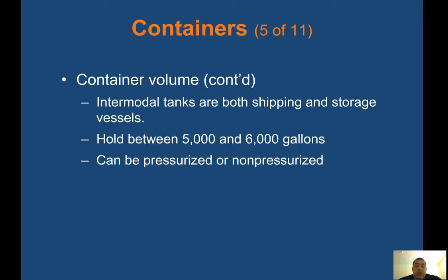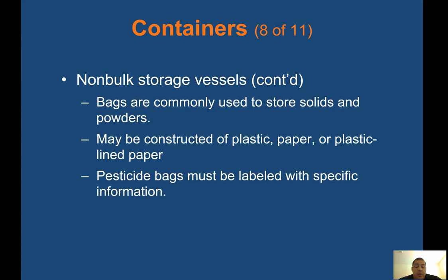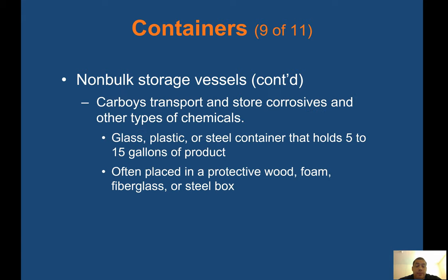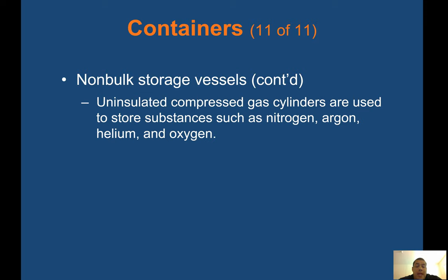Intermodal tanks are both shipping and storage vessels, holding between 5,000 and 6,000 gallons, and can be pressurized or non-pressurized. Non-bulk storage vessels hold commonly used commercial and industrial chemicals. Drums are barrel-like containers — the nature of the chemical dictates construction. Bags store solids and powders, constructed of plastic or plastic-lined paper. Pesticide bags must be labeled with specific information. Carboys transport and store corrosives — glass, plastic, or steel containers holding 5 to 15 gallons, often placed in protective wood, foam, fiberglass, or steel boxes. Uninsulated compressed gas cylinders store substances such as nitrogen, argon, helium, and oxygen.